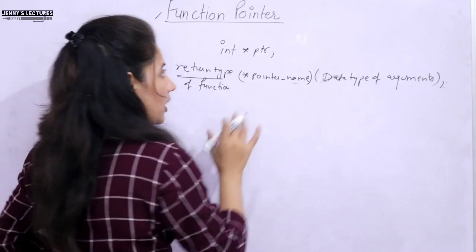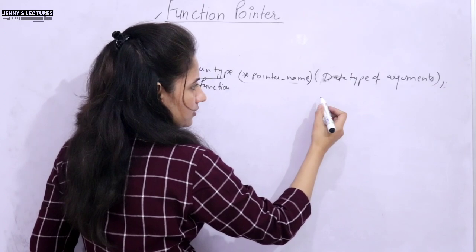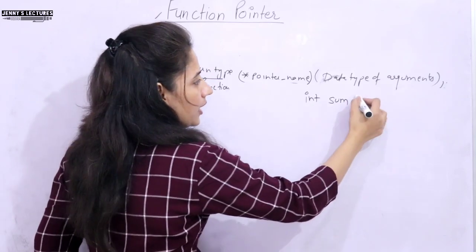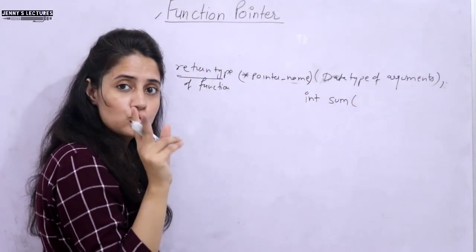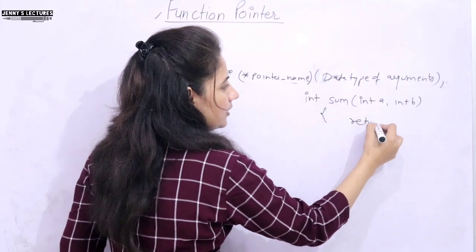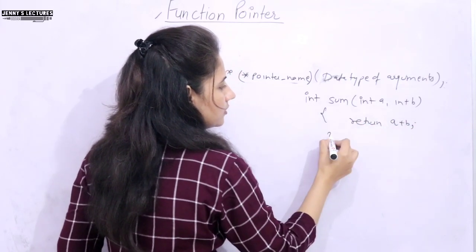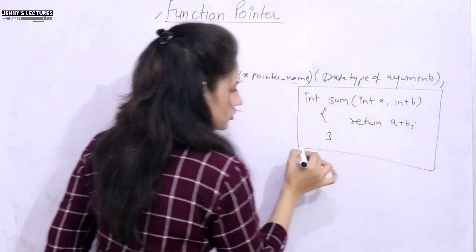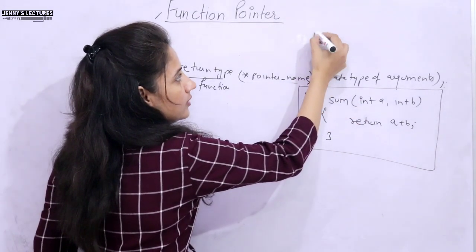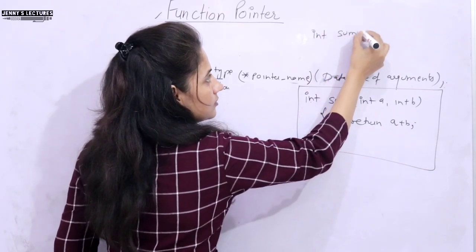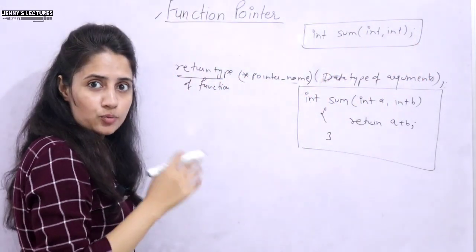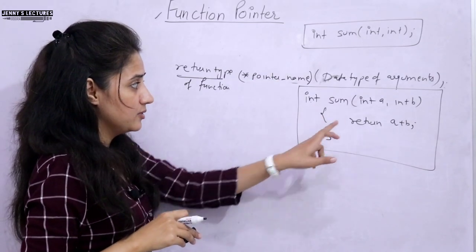Let's take a simple example. I'm taking a function: int sum — I want to do sum of two numbers. I want to pass two numbers as arguments: int a, int b, and simply return a plus b. That's the definition of this function. The prototype would be: int sum(int, int). This is the declaration of this function.